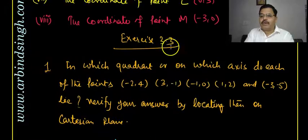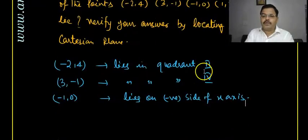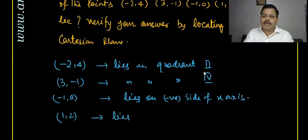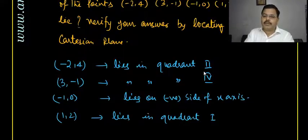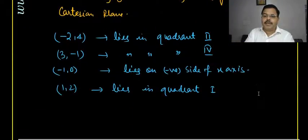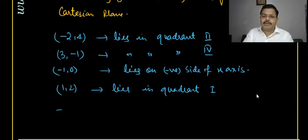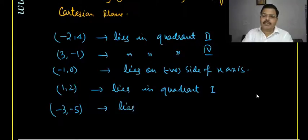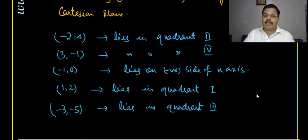For (1, 2): both are positive, so it lies in the first quadrant. For (-3, -5): both are negative, so it lies in the third quadrant. We also need to verify these answers by locating the points on the Cartesian plane.